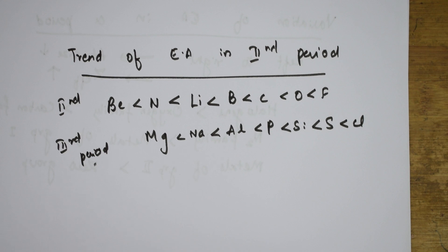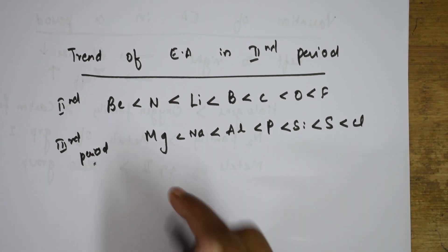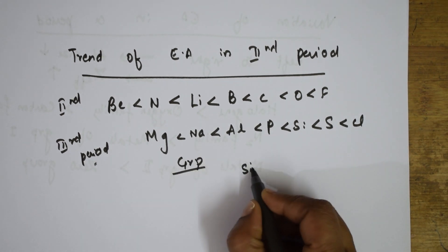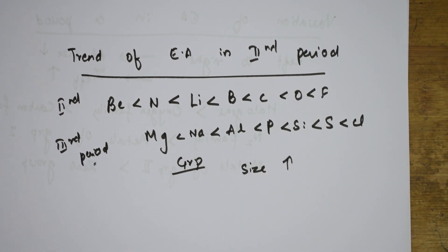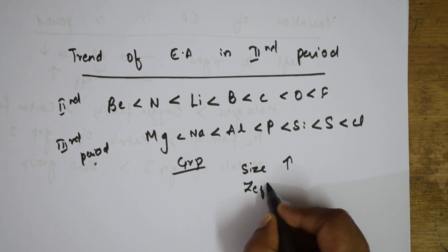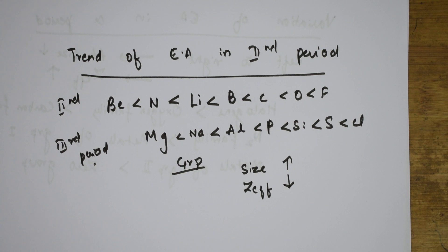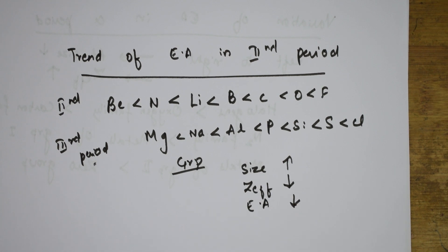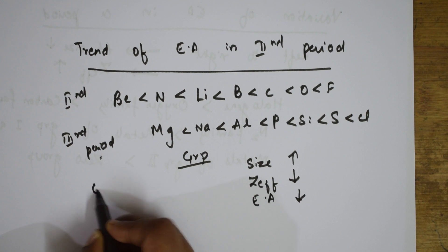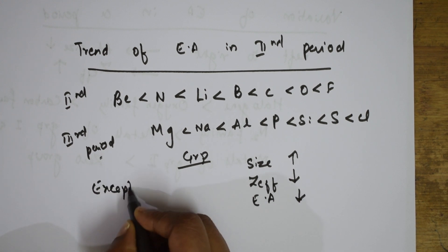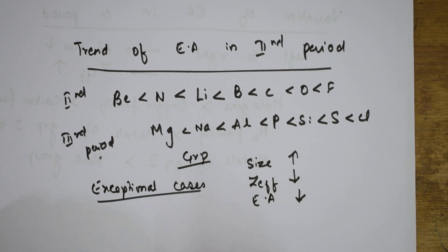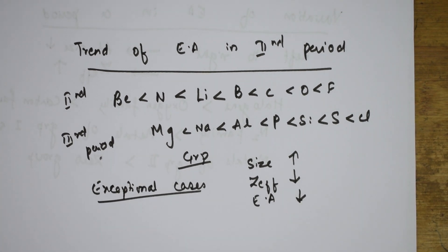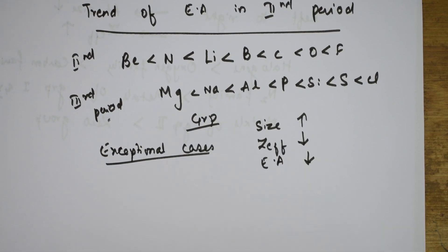In a group, when moving from top to bottom, size increases, nuclear pull decreases, and therefore electron affinity value also decreases. Now let us see the exceptional cases in electron affinity, because these are the questions that will be asked in CBC exams as well as competitive exams.